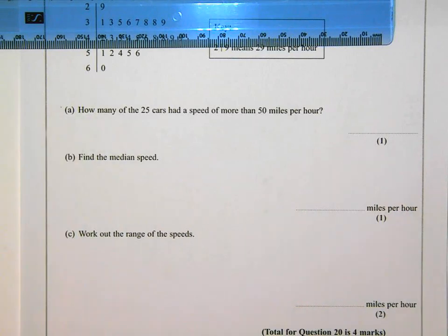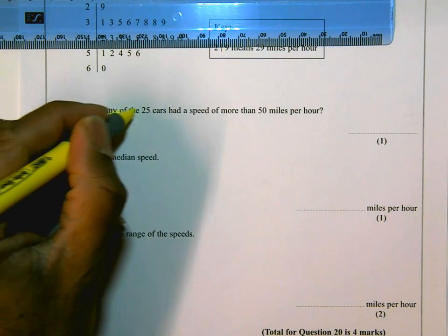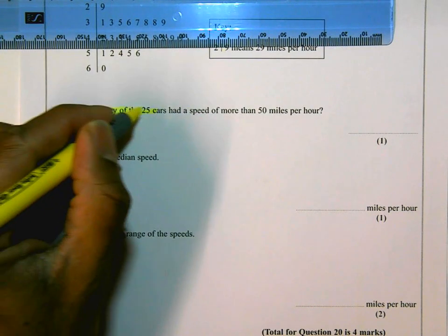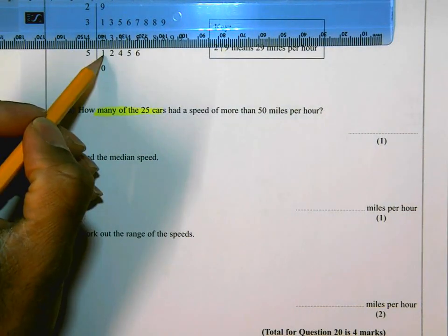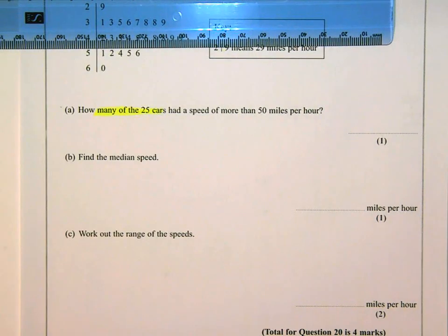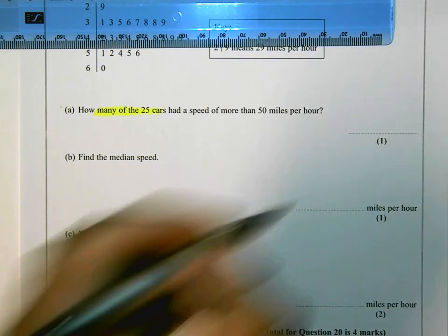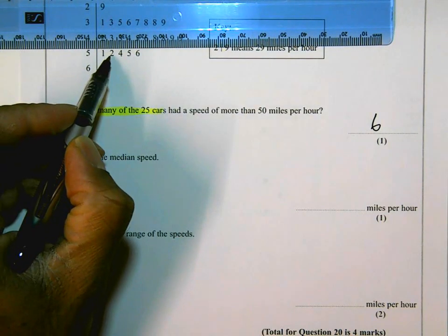And the question wants to know how many were there? How many cars of the 25 cars had speeds of more than 50 miles per hour? So we just need to count them up. And these are the cars. 1, 2, 3, 4, 5, 6. So 6 cars had speeds greater than 50 miles per hour. Let's just check that again. 1, 2, 3, 4, 5, 6.